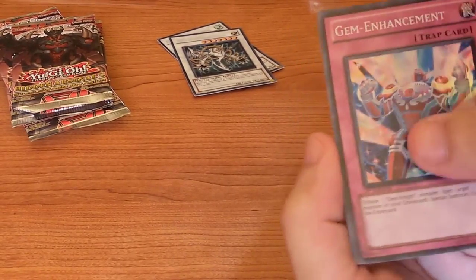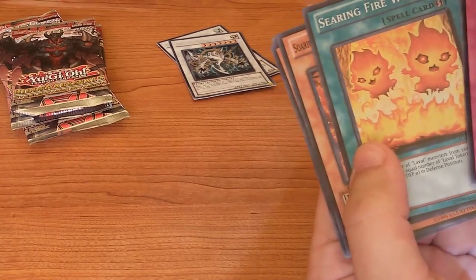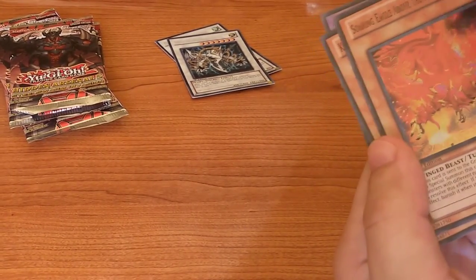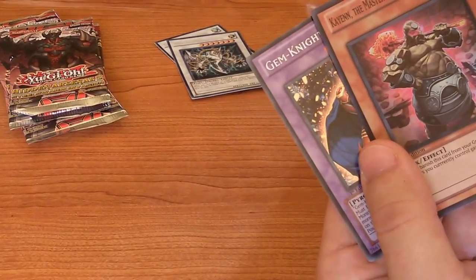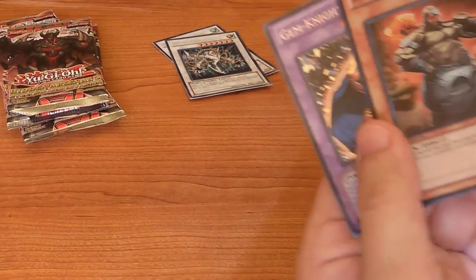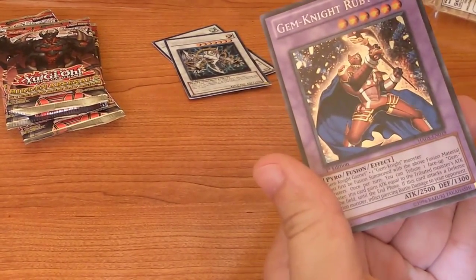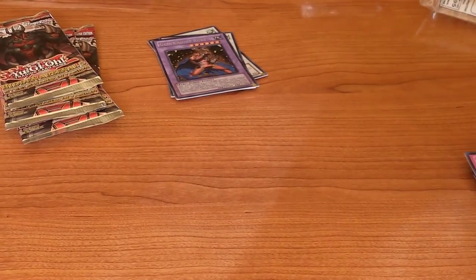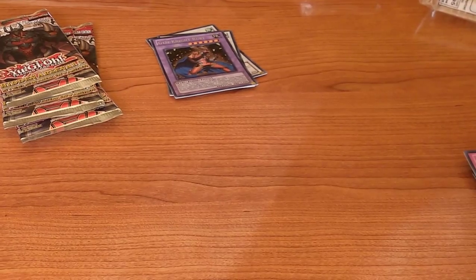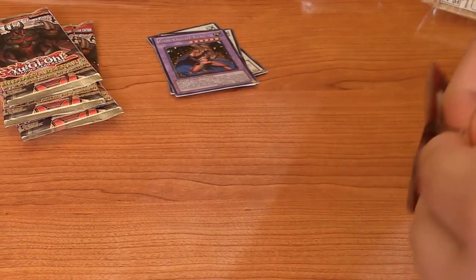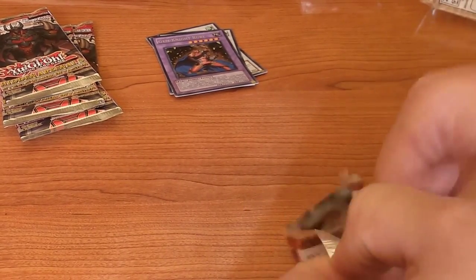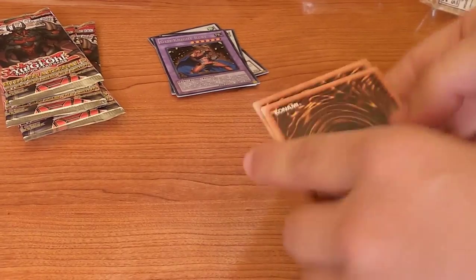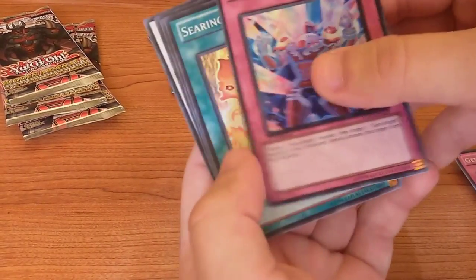Gem Enchantment, Searing Firewall spell card, Soaring Eagle Above the Searing Land. Okay, that's one long name. Gaia Knight the Master, Magma Blacksmith, and Gem Knight Ruby fusion. Okay, this one looks nice. I'll put it here.